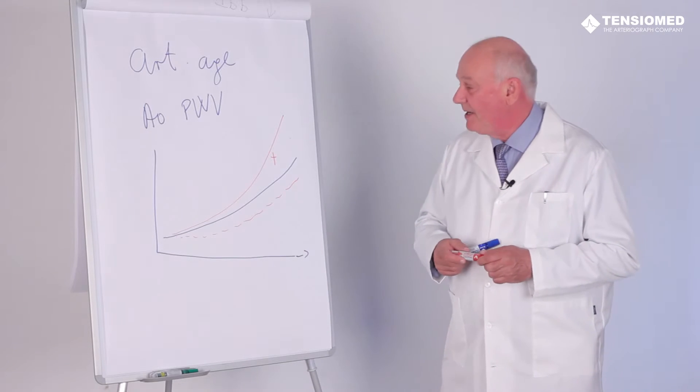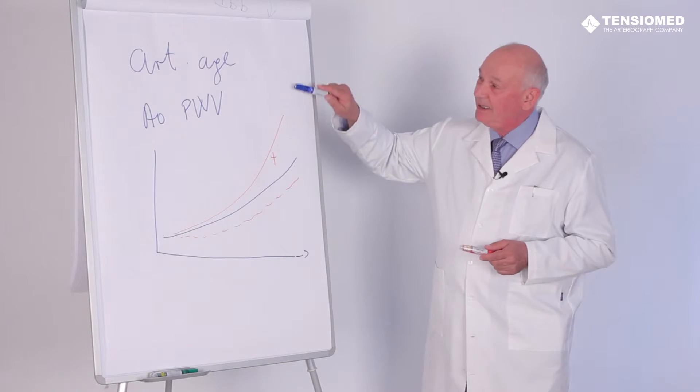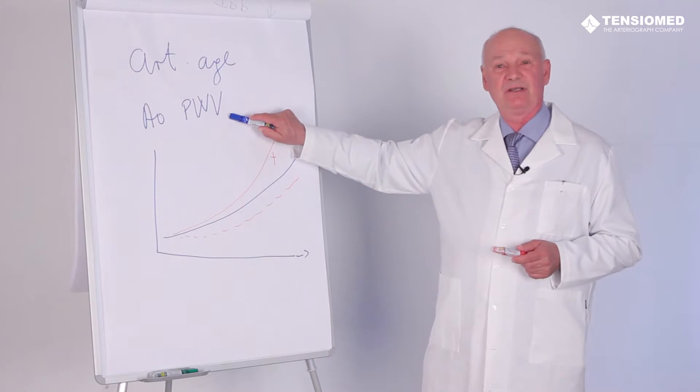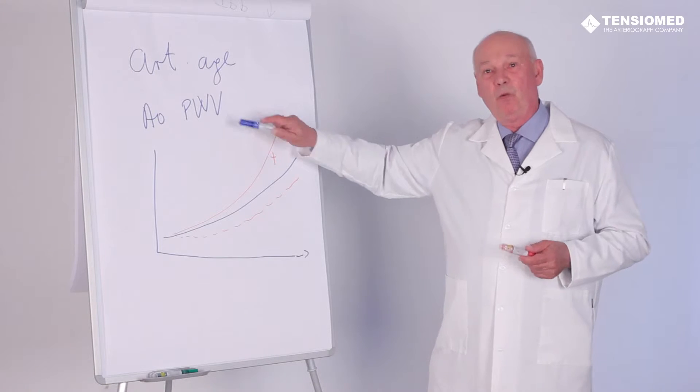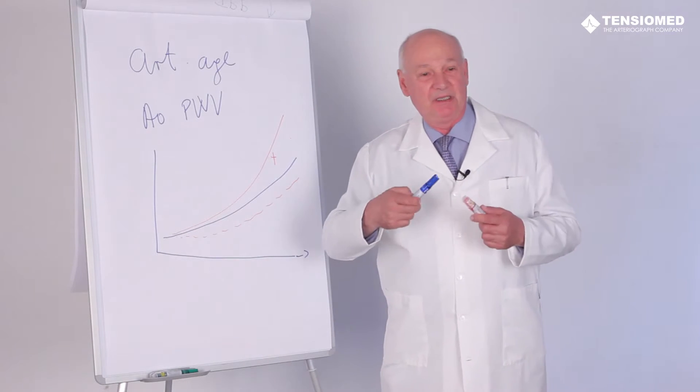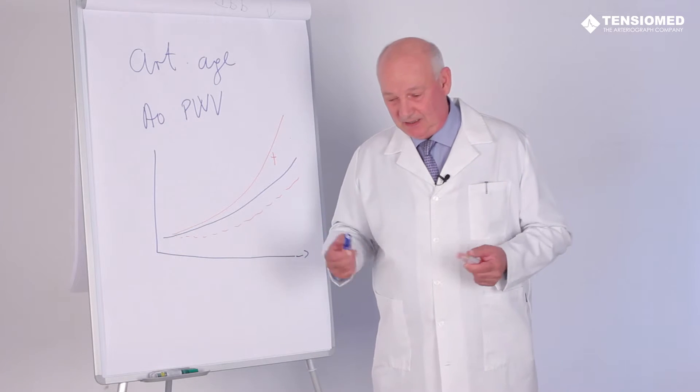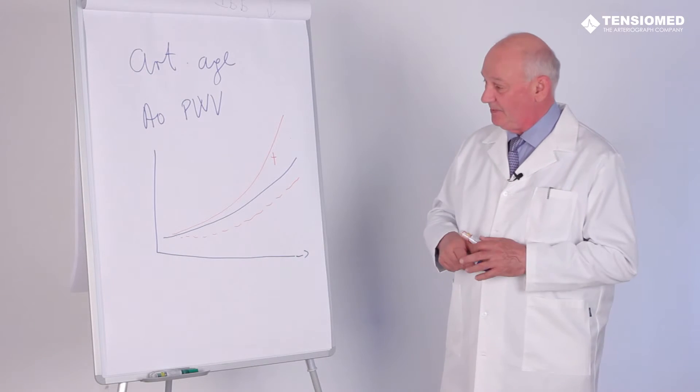So a very big question: Why should arterial age be assessed as aortic pulse velocity measurement? Why is it not enough to measure the cholesterol, the pulse, the blood pressure, and many other parameters?